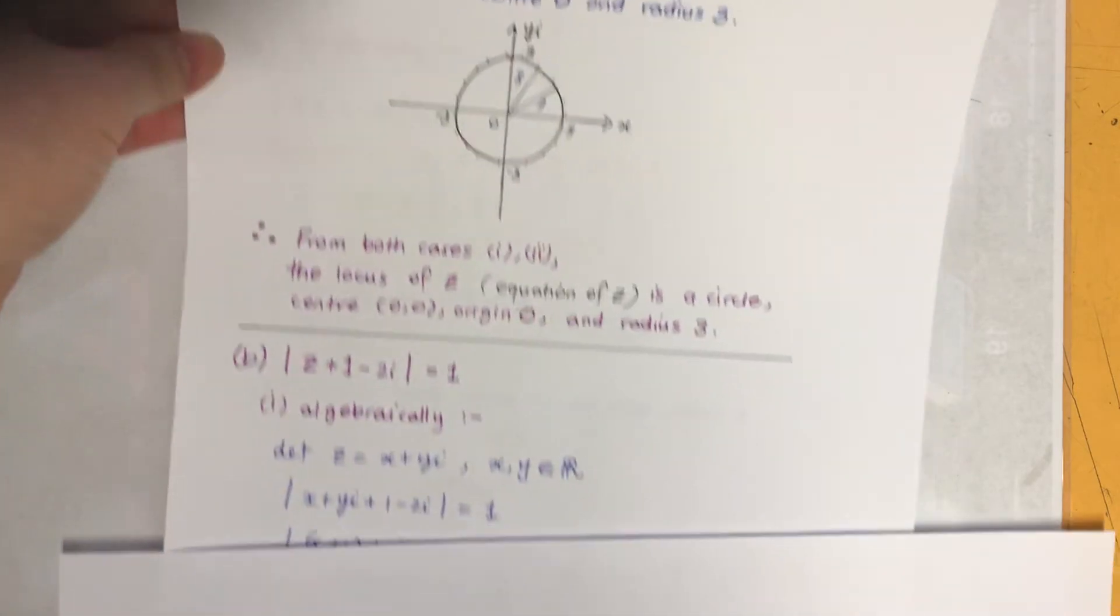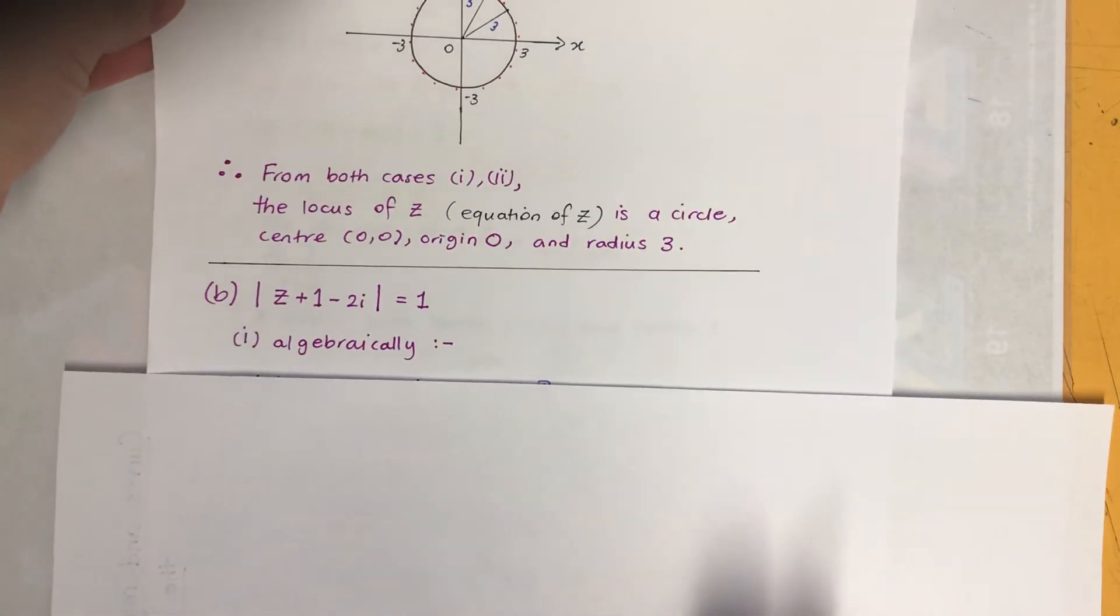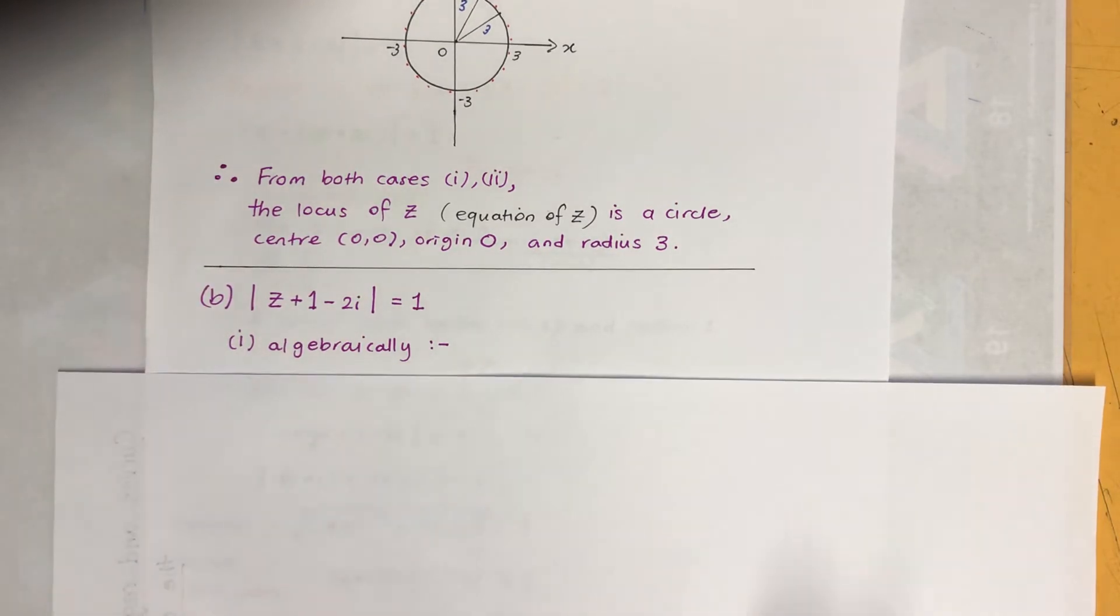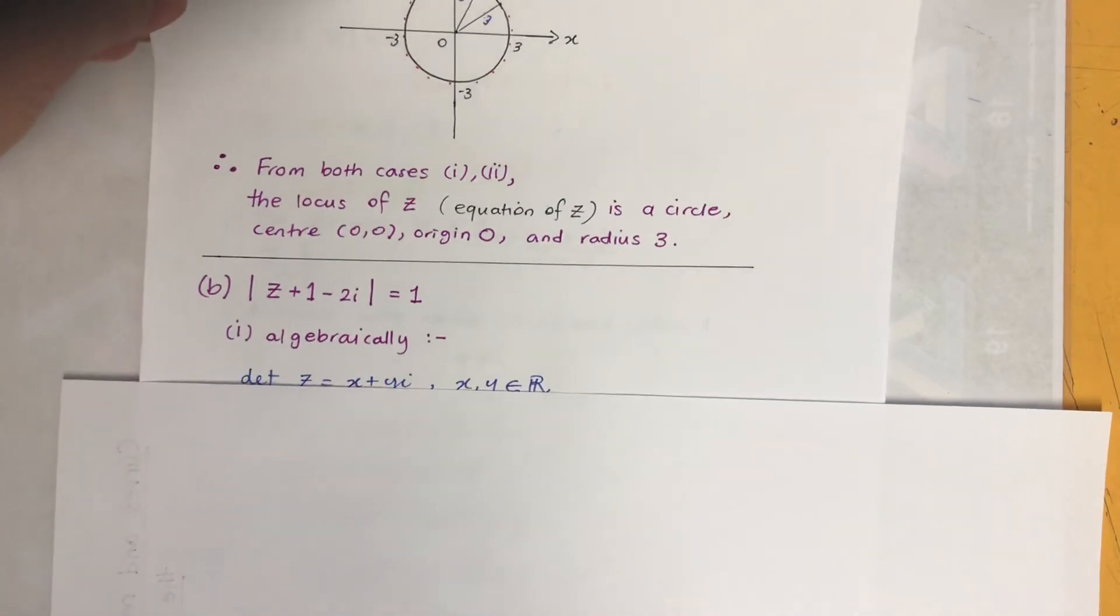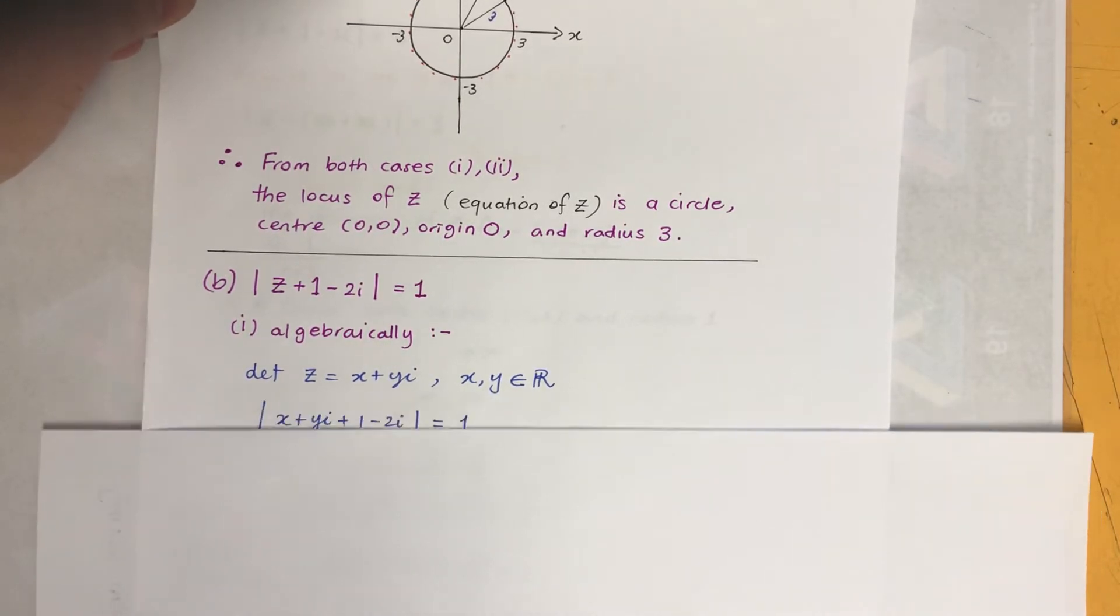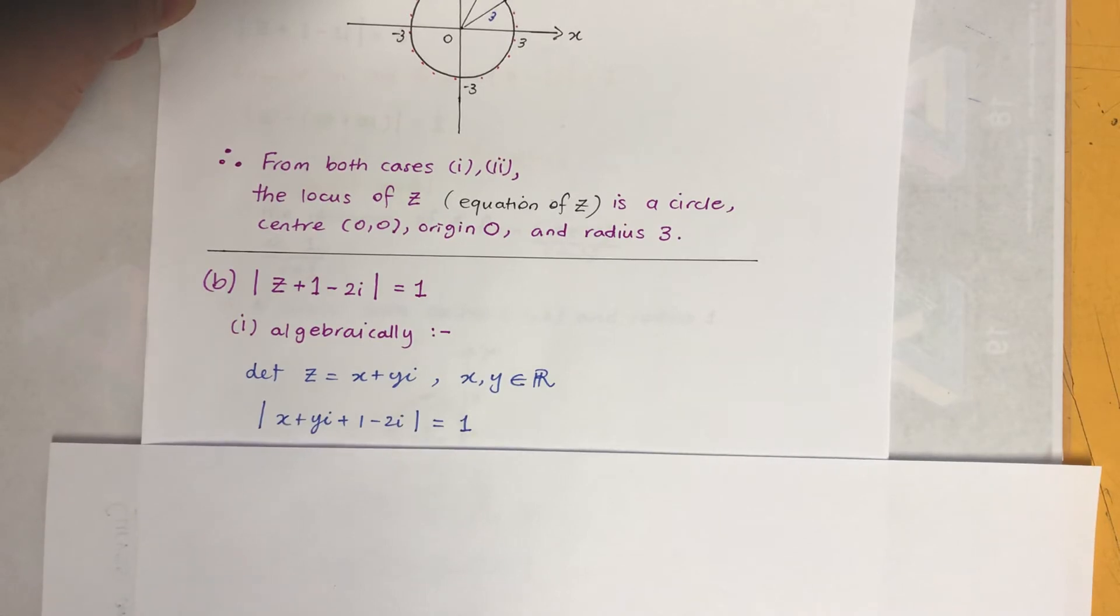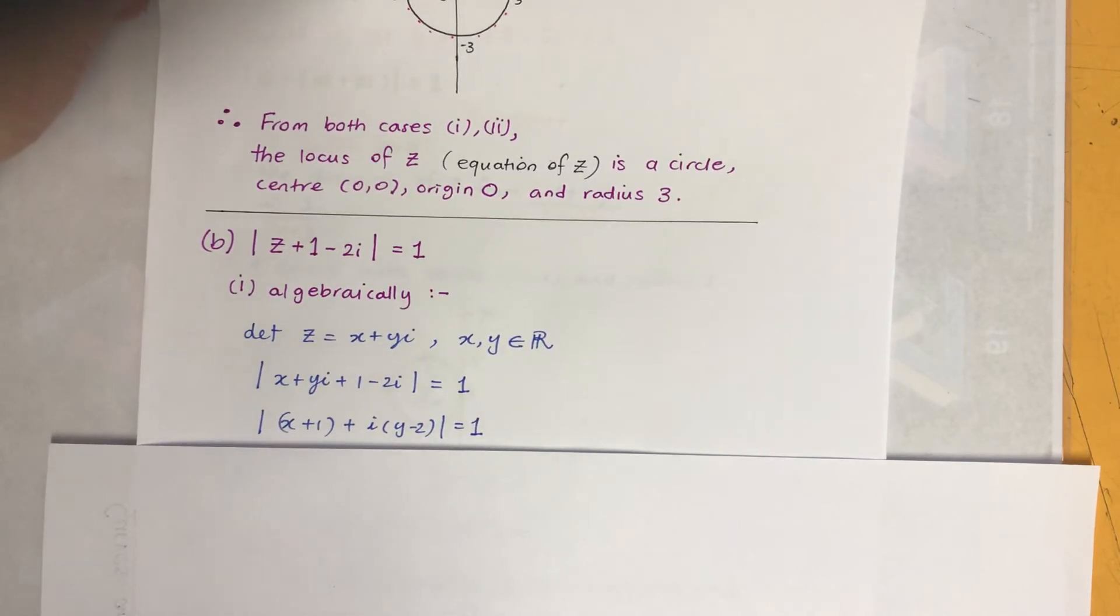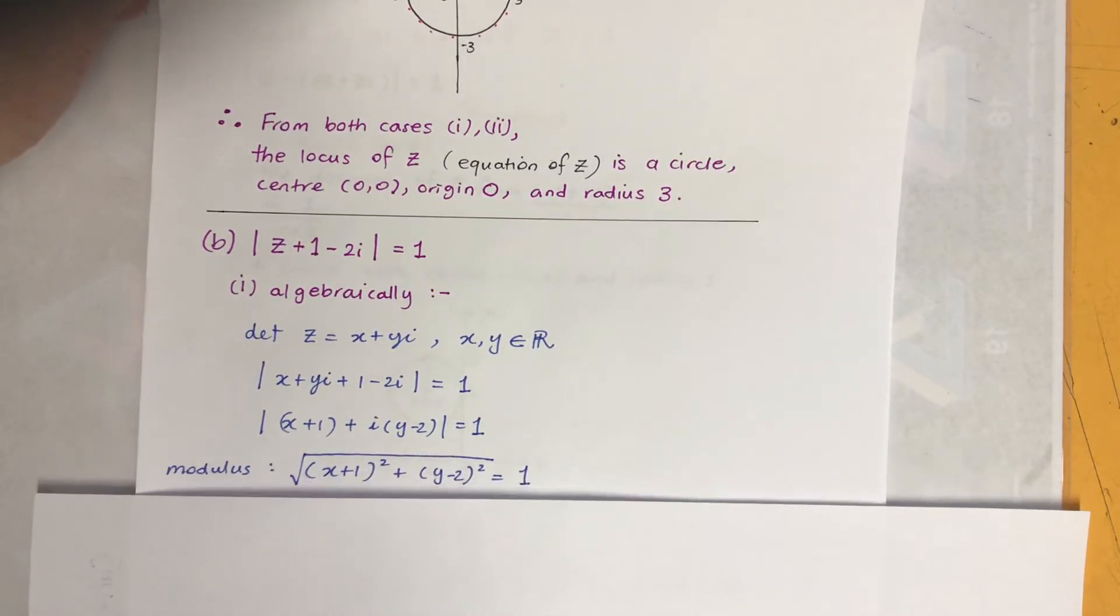Okay, so second example, let's have a look at that. It's a little bit different form but it's the same. So algebraically we use Z equals X plus YI, and of course X, Y are real. And I replace the Z with X plus YI, and then I'm putting together all the real parts and then imaginary parts together.